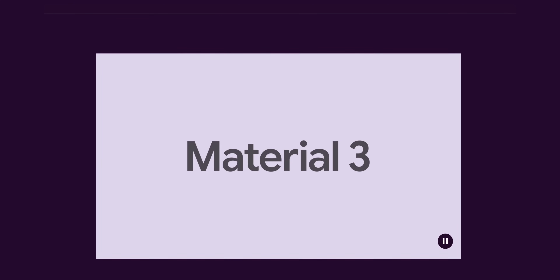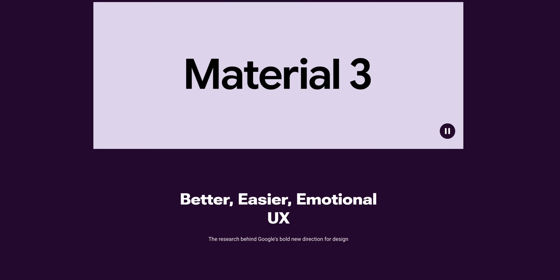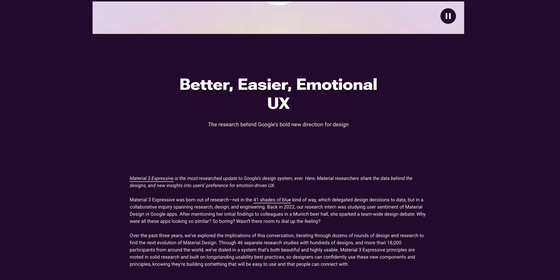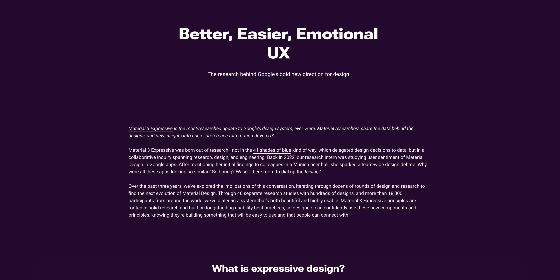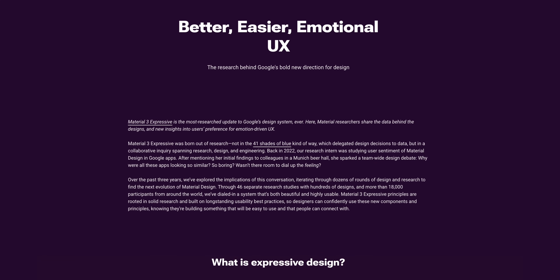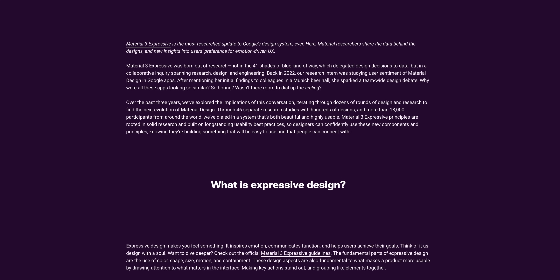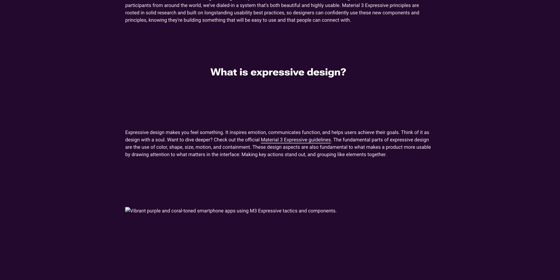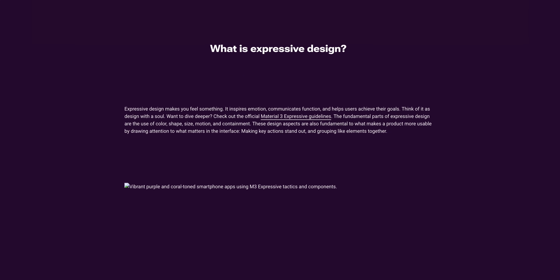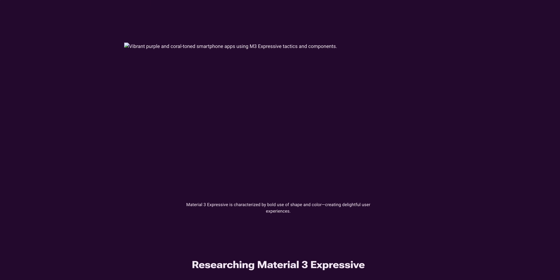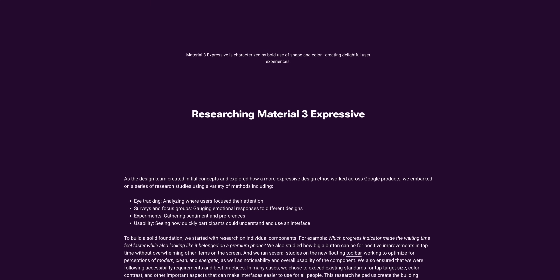This accidental reveal detailed all the thought and surprising amount of research behind Material 3 Expressive. We were expecting this at Google I/O — it wasn't meant for public eyes just yet. It was destined to be fully unveiled in just a few weeks, but as is the way of the internet when these things leak, the Wayback Machine grabbed it so we can have a look at what Google is planning for its OS, applications, and developers.